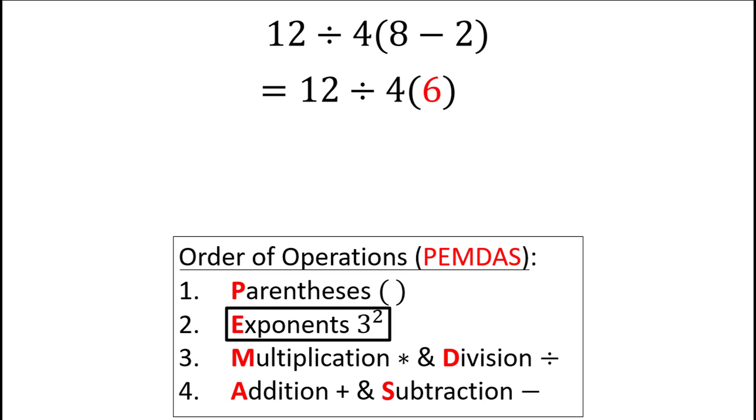We don't have any exponents, so we can skip the E in PEMDAS. Then we look to multiplication and division, which, remember, are on the same level. Notice here that the 4 and the 6 next to each other in parentheses indicates that they should be multiplied together.